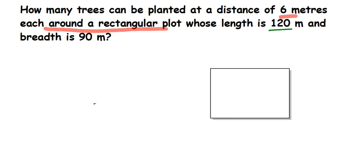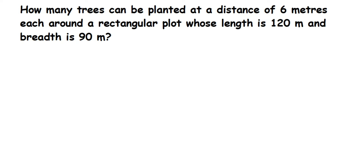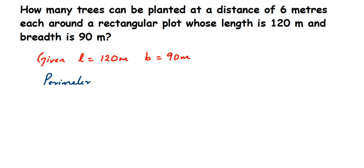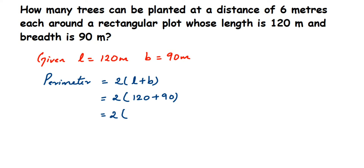Let's start solving. What is given: length is equal to 120 meters, breadth is 90 meters. We have to first find the perimeter. The perimeter of a rectangle is 2 into (l + b). Sometimes people also write it as 2l + 2b — that is also correct. So perimeter equals 2 into (120 + 90).